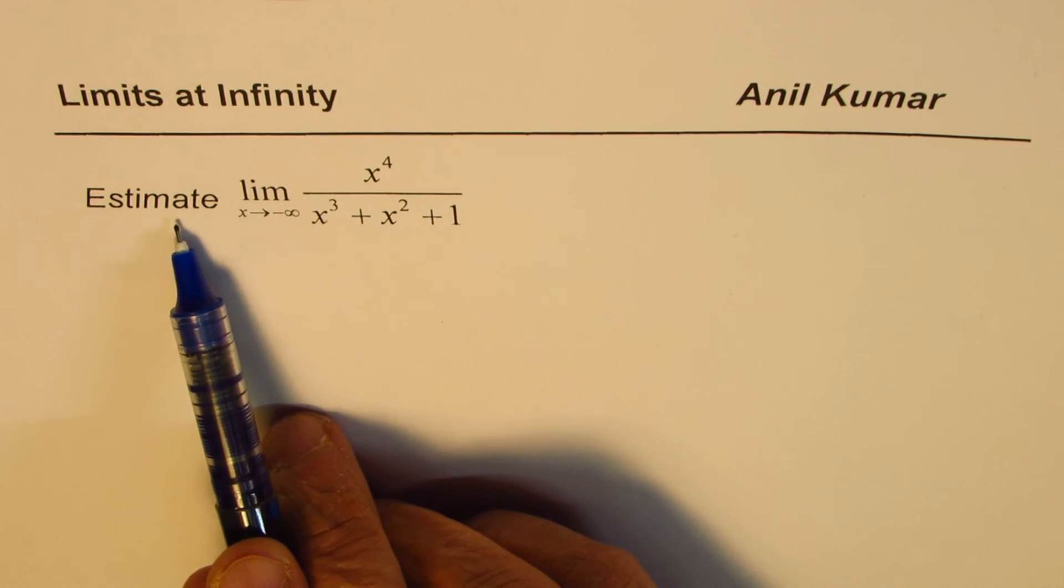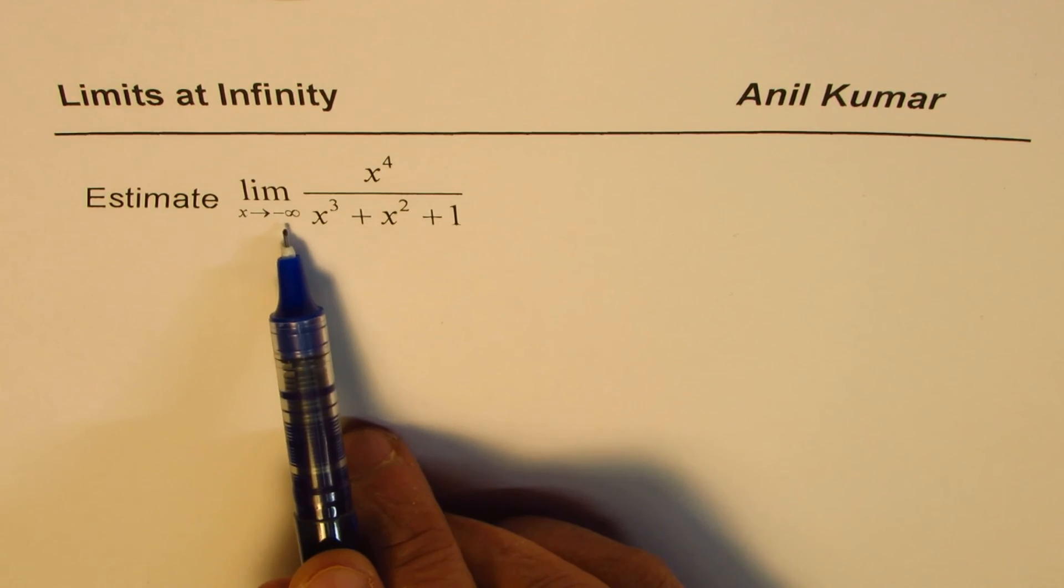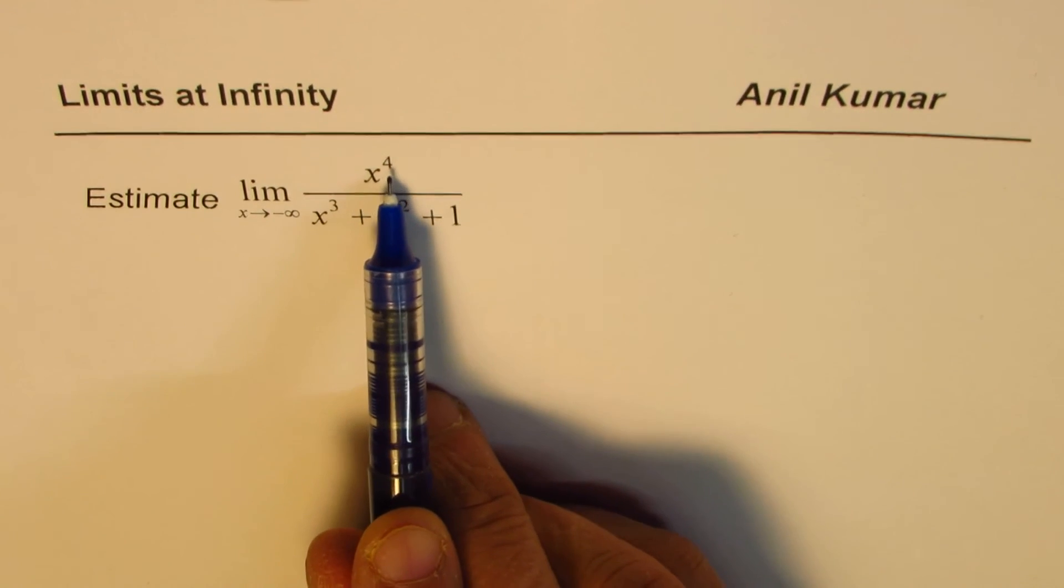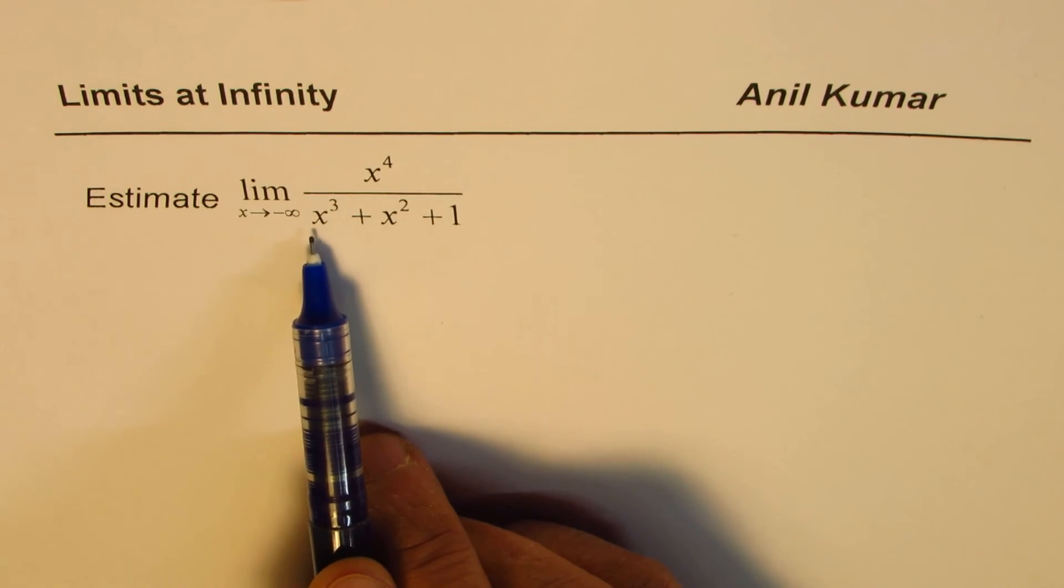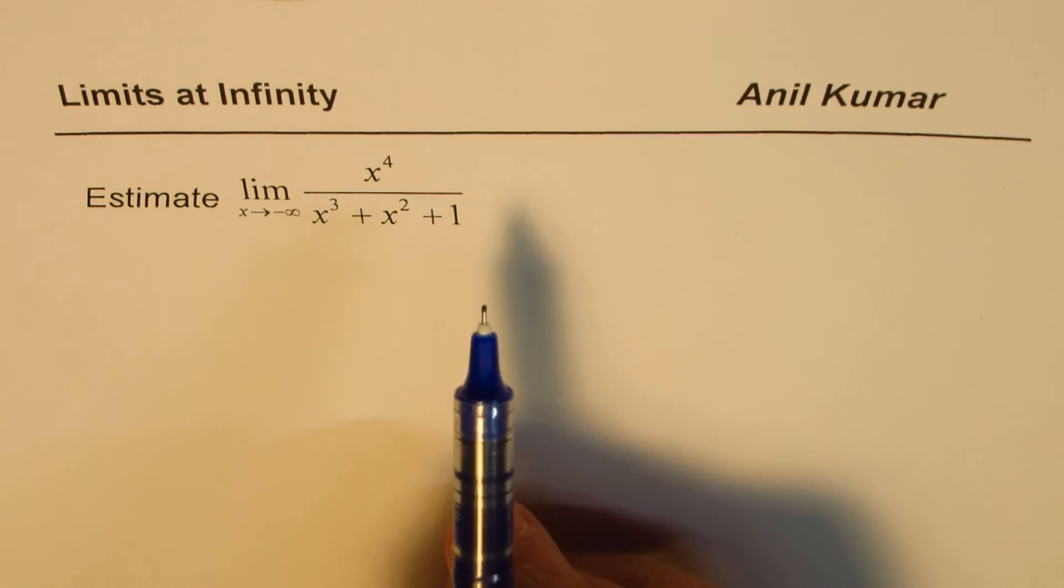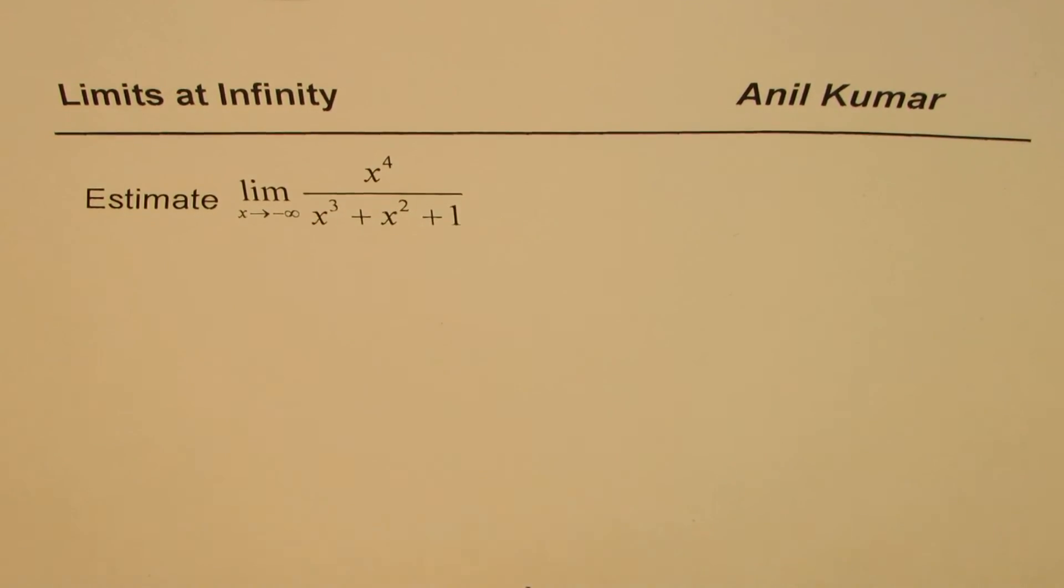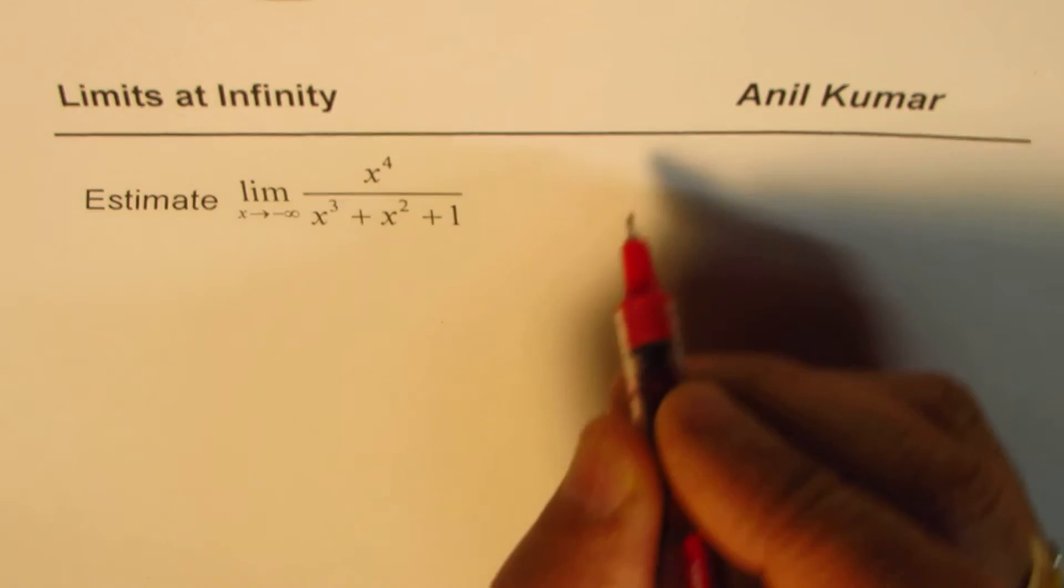Here, we need to find limit as x approaches minus infinity for x to the power of 4 divided by x cubed plus x squared plus 1. Now what you notice here is that degree of numerator is higher.